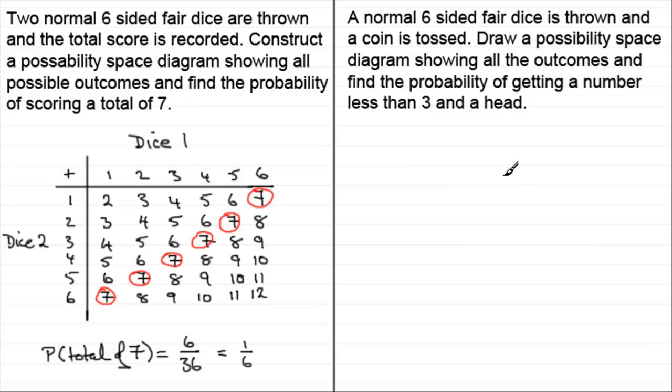OK, let's see how you got on. So what I'd want to do is record the score on the dice first of all. You can either put it on a row or in a column. It's up to you. I'm going to put it on a row.